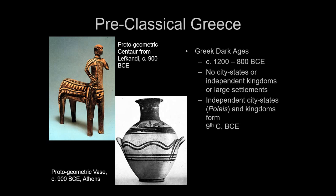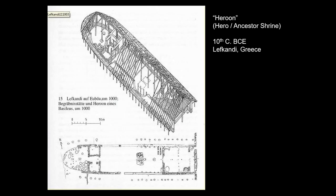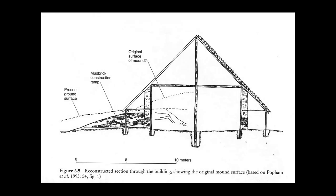The art being produced at this time is very simple. We call it proto-geometric because the first identifiable style we can recognize in this post-Bronze Age Greece is the geometric style, and this stuff isn't quite there yet. In terms of buildings, we only have very simple structures, like the Heroon — a hero or ancestor shrine — in Lefkandi, Greece, with a simple stone foundation and an A-frame structure over the top supported by wooden poles.